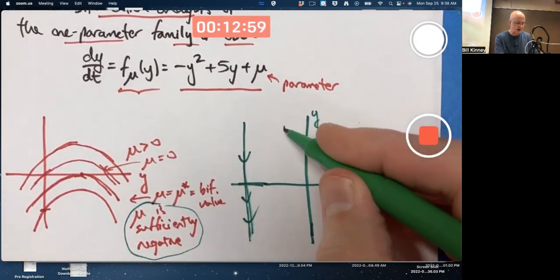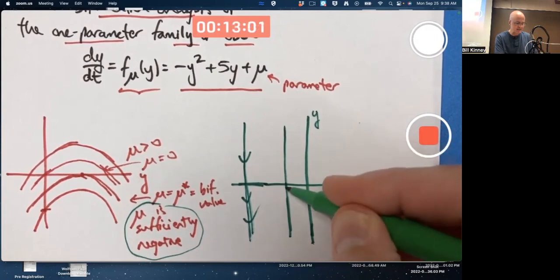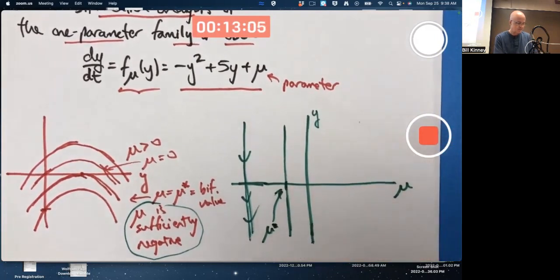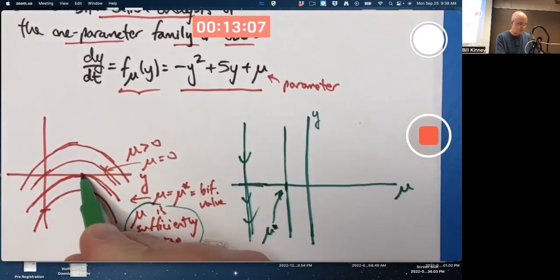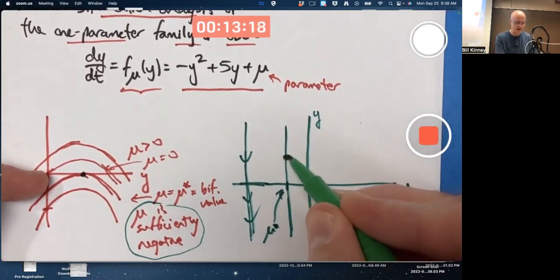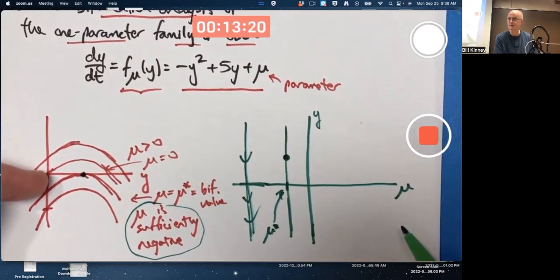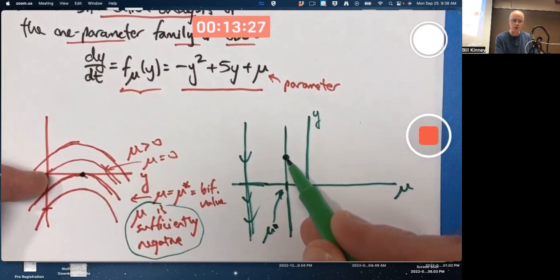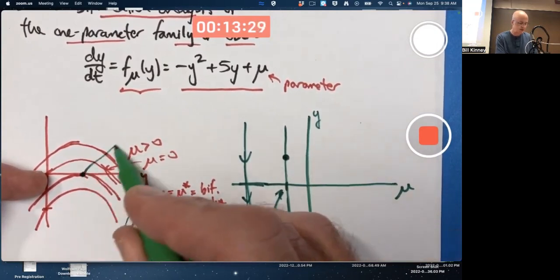At mu equals mu star, whatever that is, we haven't found it yet. This graph has one y-intercept. It's the horizontal y-axis. At a positive value of y. So the equilibrium point here is going to be at some positive value of y, but mu is negative. The graph is zero at that value of y, so that point is an equilibrium point. These correspond to each other.